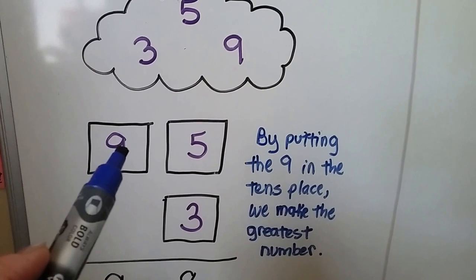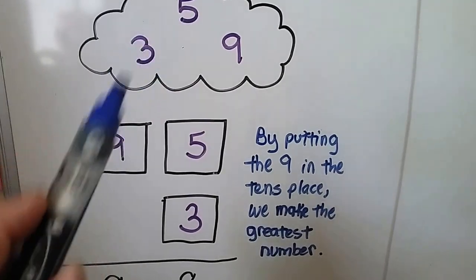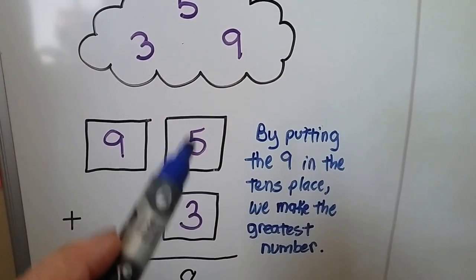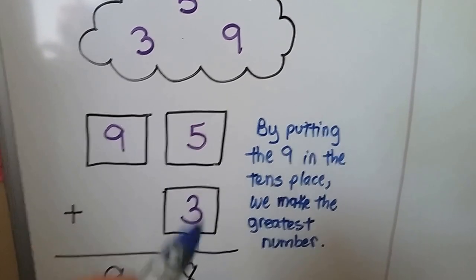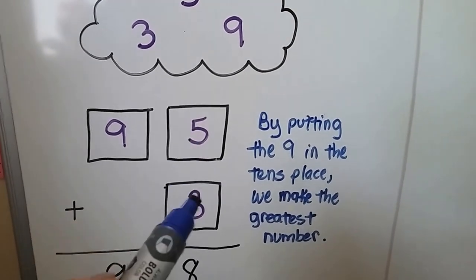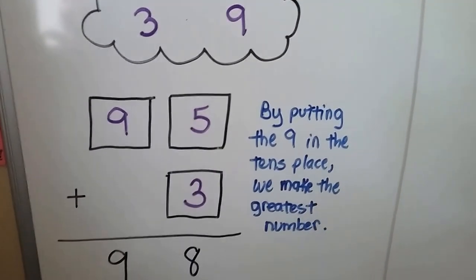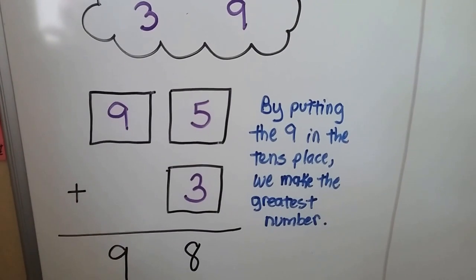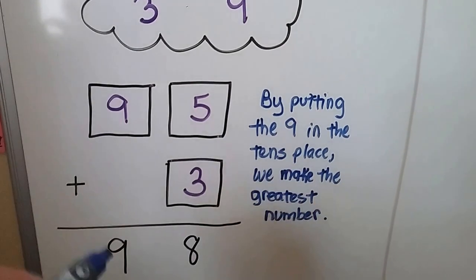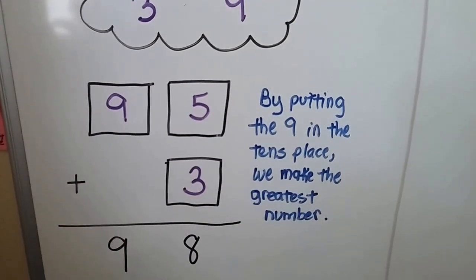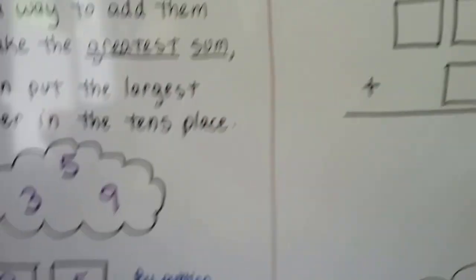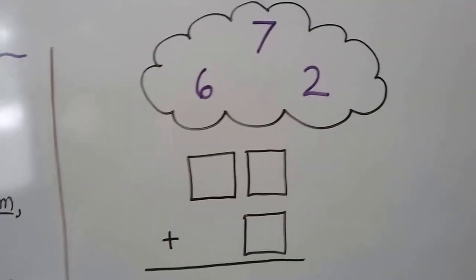Nine tens is more than three tens or five tens, and it doesn't matter where we put the five or the three, because five plus three or three plus five is still going to equal eight for the ones place. Now we have nine tens, and that's the greatest number.